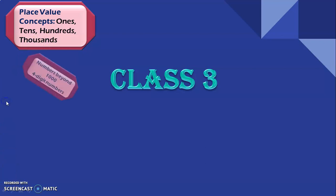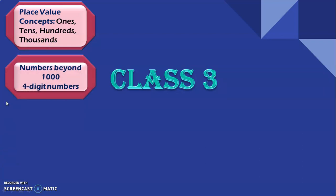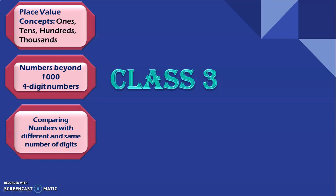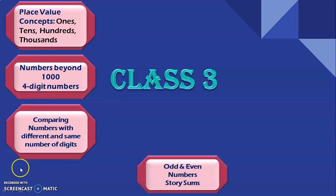The next topic we will be dealing with is numbers beyond 1000, and there are a few activities we will be covering there. The following topic is comparing numbers with different and same number of digits — comparing a 2-digit or 3-digit number with a 4-digit number, and also comparing 4-digit numbers among themselves. Then we will see more about odd and even numbers and also do some story sums or word problems.